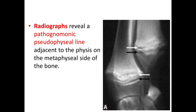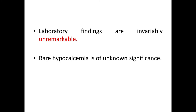An important diagnostic tool is radiography. Radiographs reveal a pathognomonic pseudophyseal line adjacent to the physis on the metaphyseal side of the bone, as seen in this picture — this is called a double physis, which is a radiolucent line parallel to the physis. Laboratory findings are invariably unremarkable, and rare hypocalcemia is of unknown significance.